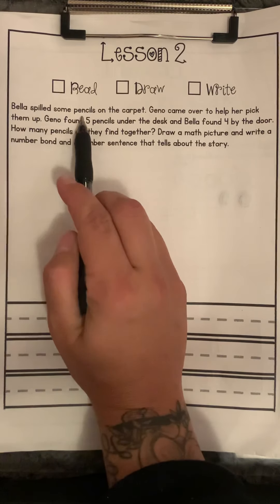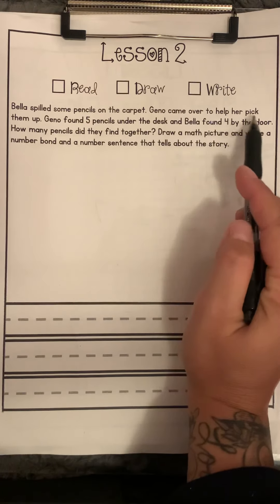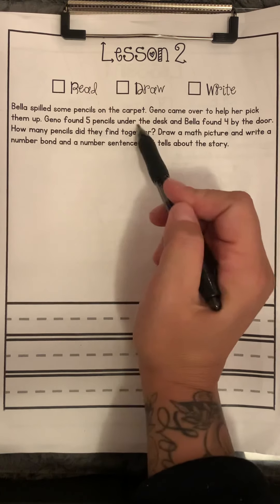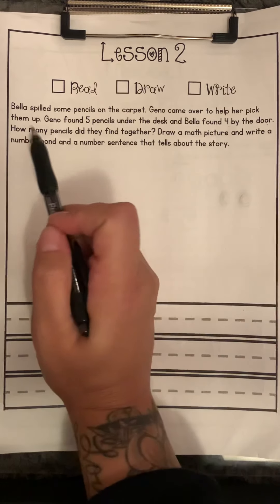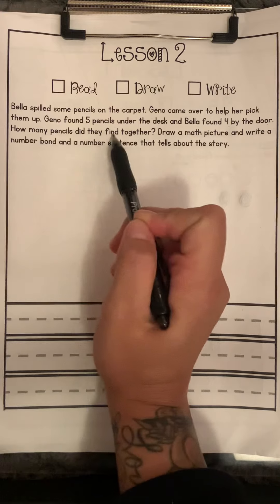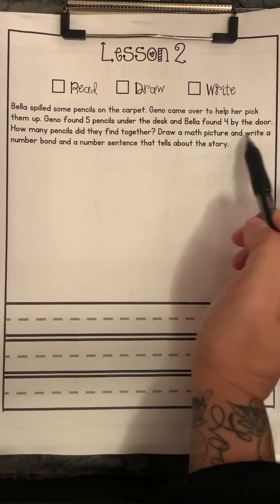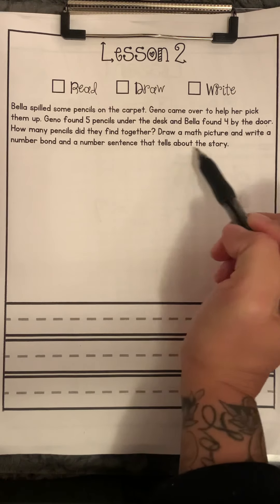Bella spilled some pencils on the carpet. Gino came over to help her pick them up. Gino found five pencils under the desk, and Bella found four by the door. How many pencils did they find together? Draw a math picture and write a number bond and a number sentence that tells about the story.